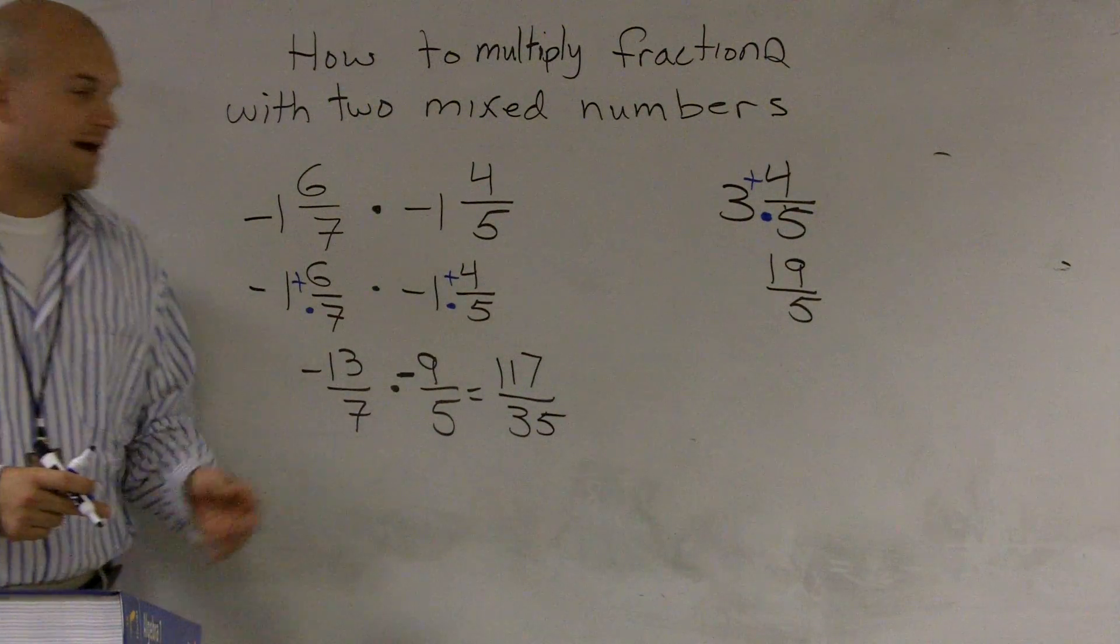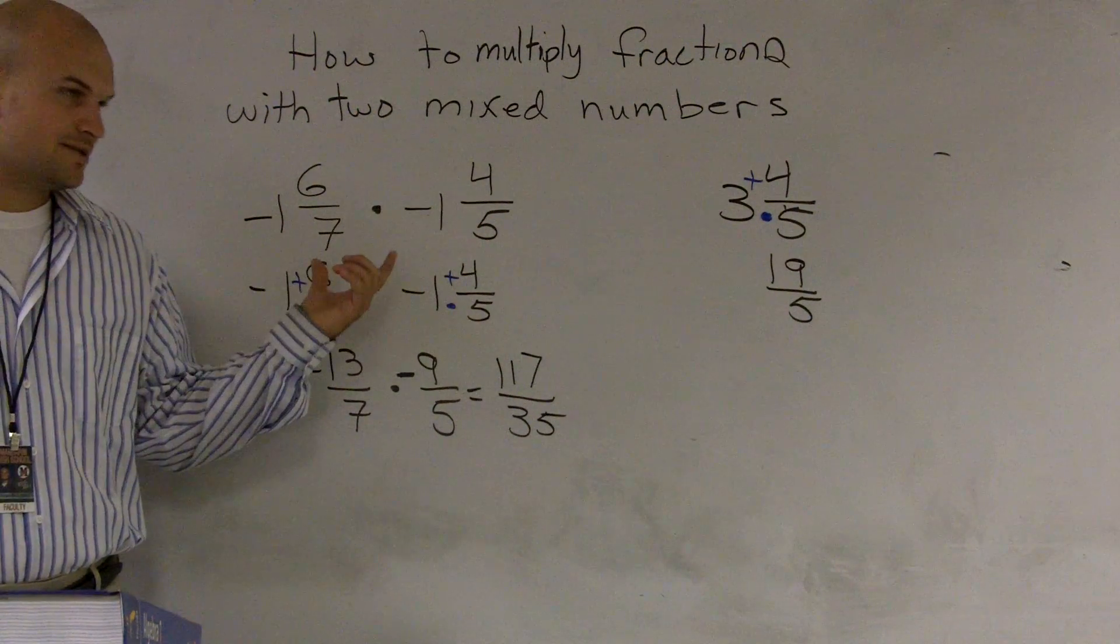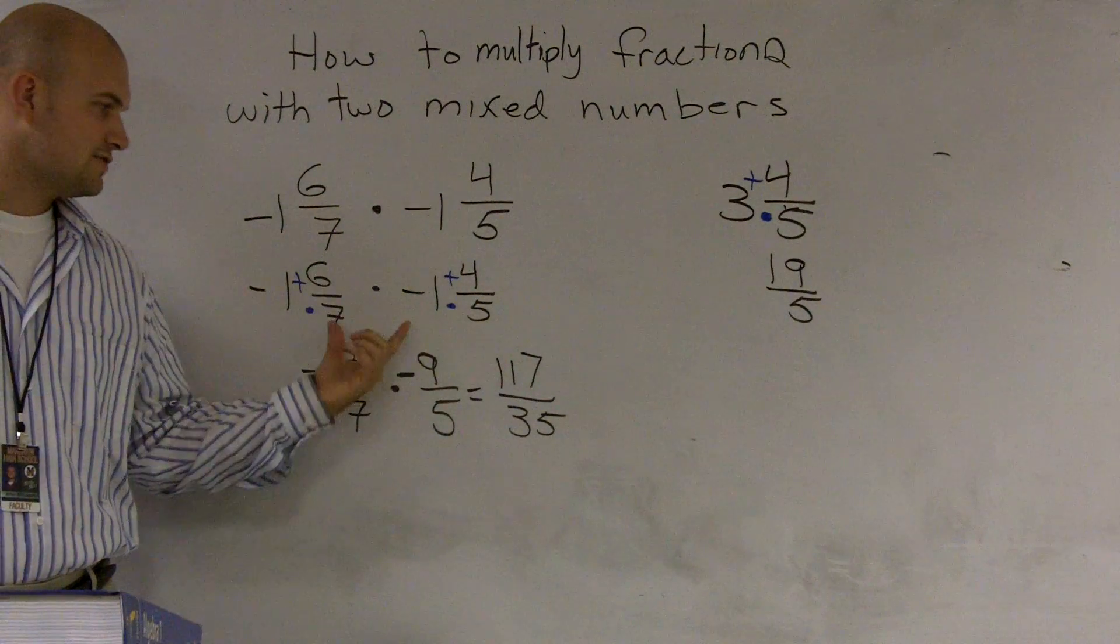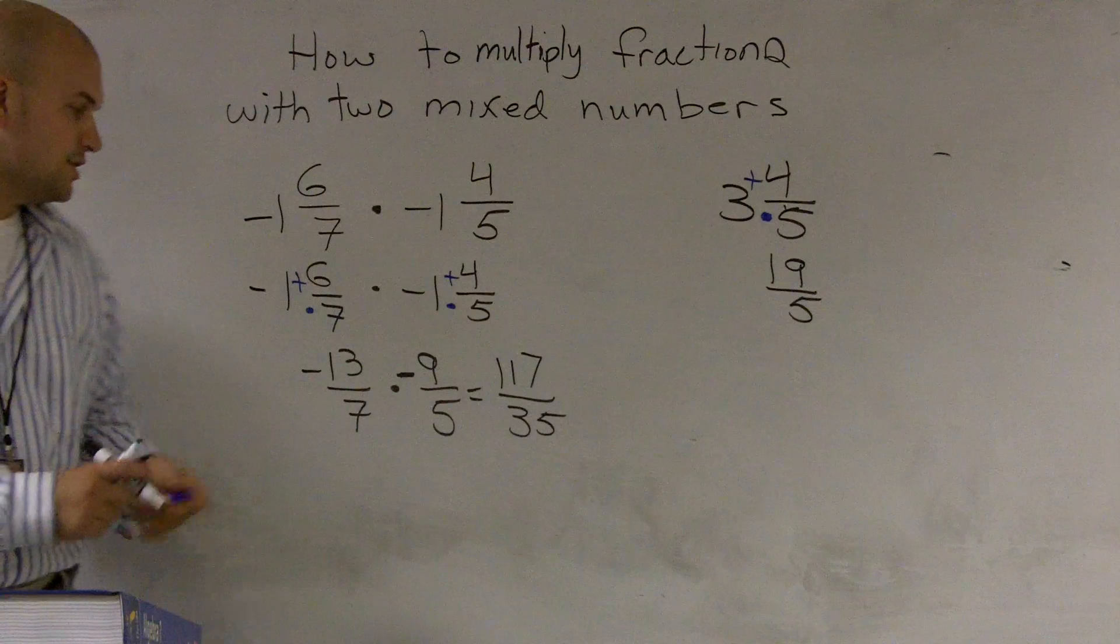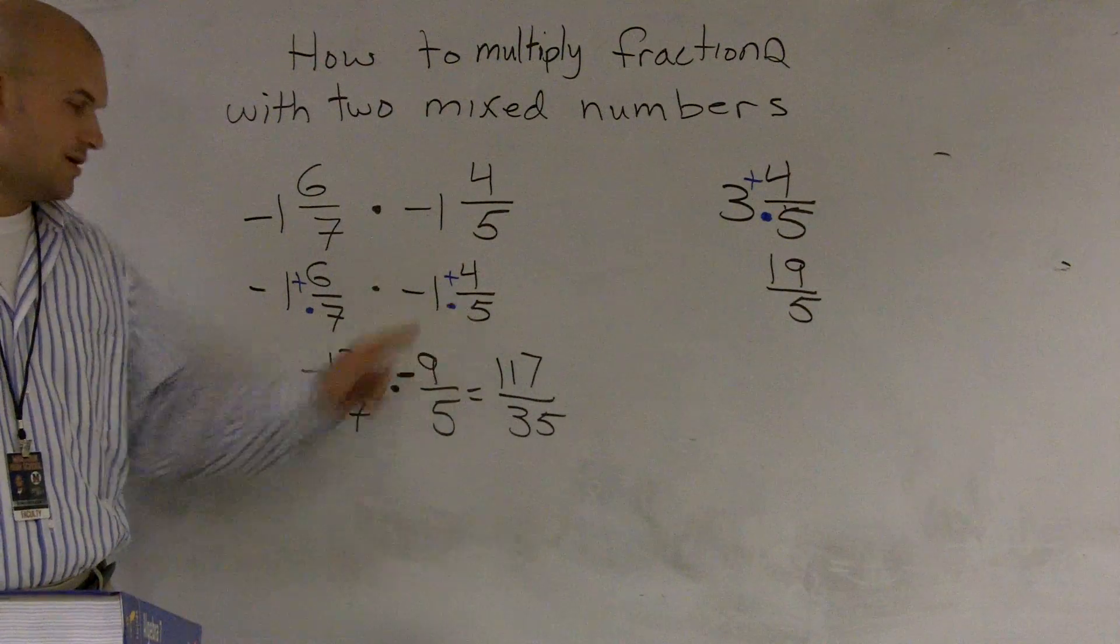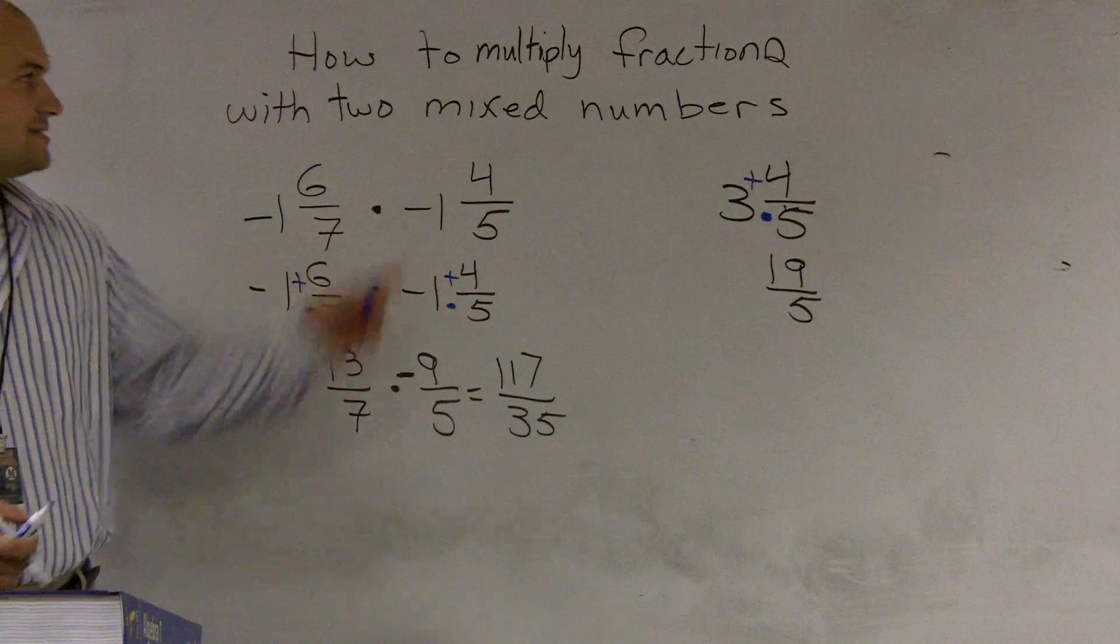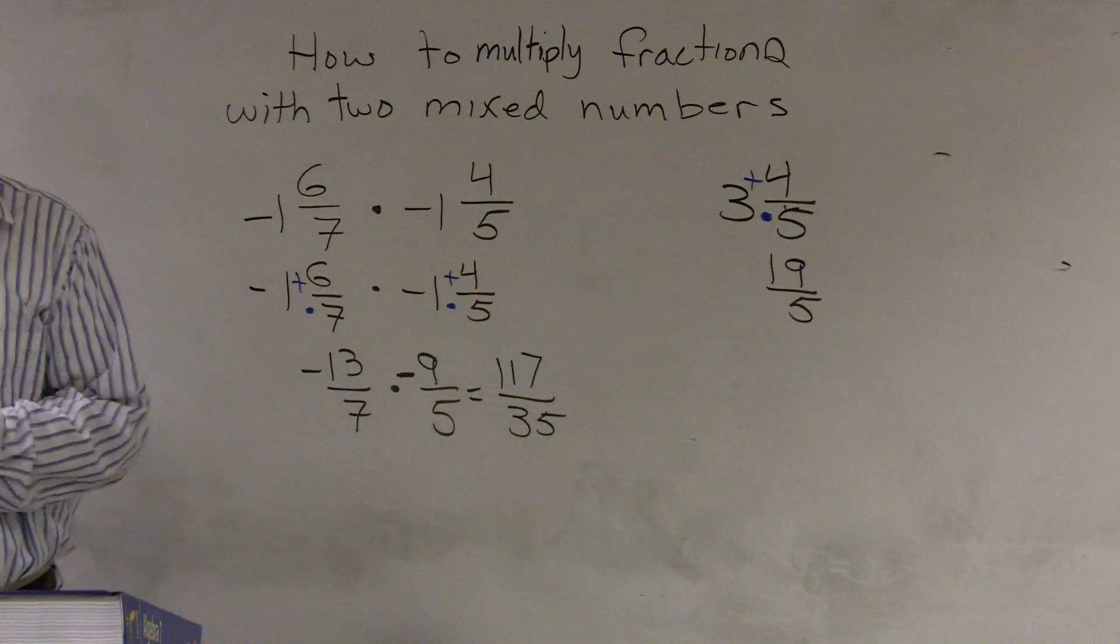So therefore, when I'm multiplying two mixed numbers, I need to make sure that I transfer first over to improper fractions and then I multiply across. Notice my numerators are multiplied across and my denominators are multiplied across. That's how you multiply fractions with two mixed numbers.